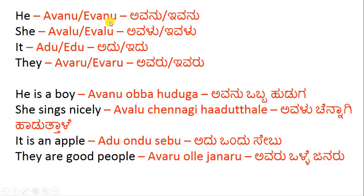We use Ivanu when the person is near to you — next to you, maybe in front of you, near to you. Or if you are pointing at a photograph of a person who is in a different country, then you use Avanu. Ivalu, Idu, and Ivaru are also used for she, it, and they when they are near to you. Now let us use this in a sentence.